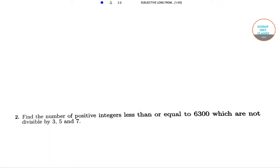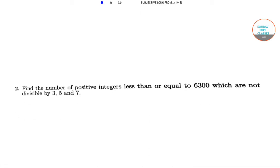Hello, welcome to Sorosers Classes. In this video, I will be solving some subjective questions from Tomato Book. Now, in our first question, we need to find the number of positive integers less than or equal to 6300 which are not divisible by 3, 5, or 7. Our universal set S is equal to 1, 2, 3, till 6300.